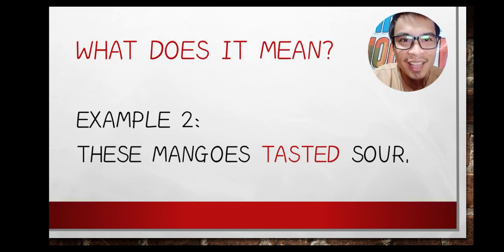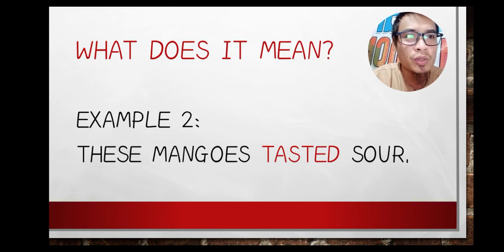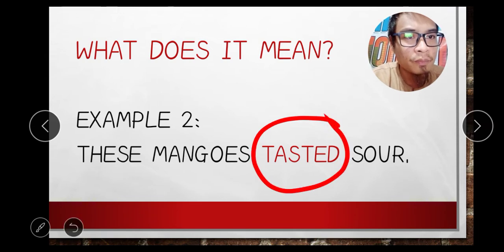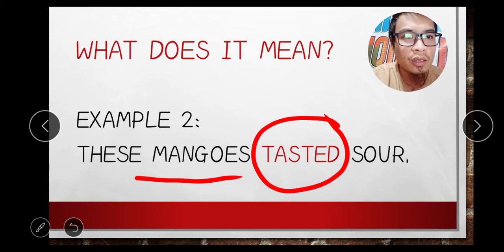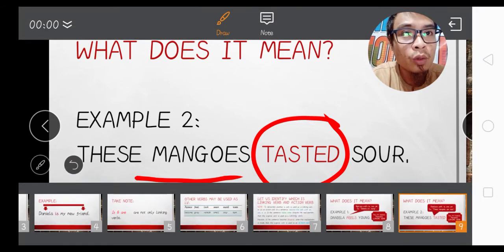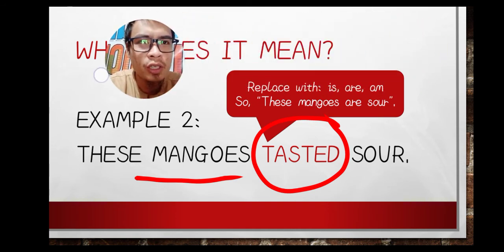Example number two: 'These mangoes tasted sour.' The verb of this sentence is 'tasted.' The subject is 'these mangoes,' and they are described as 'sour.'